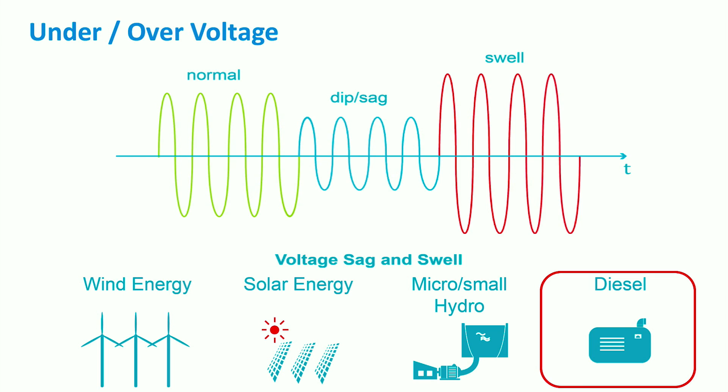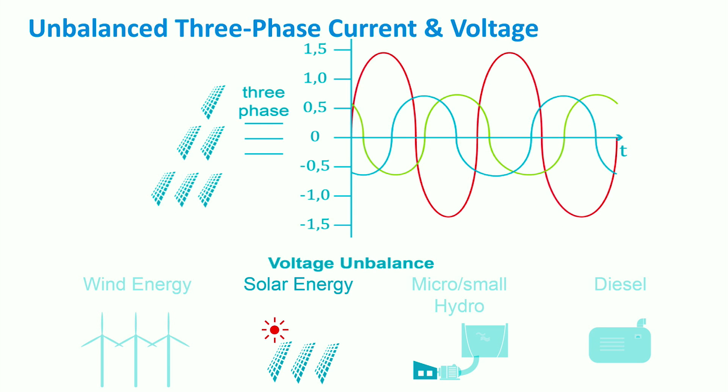One of the most serious power quality issues in microgrids is voltage unbalance. It is worth reminding that, in practice, distribution networks are inherently unbalanced.